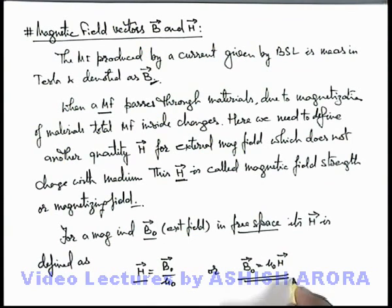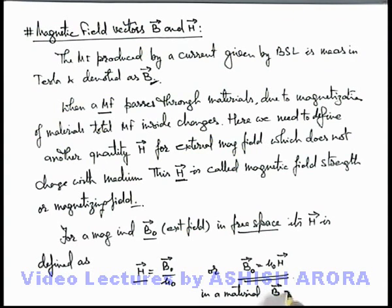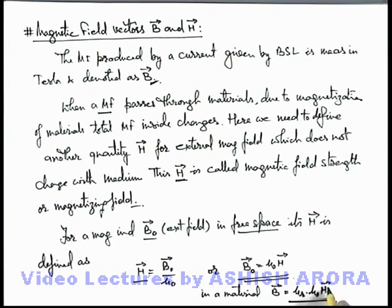And when we talk about a medium, we directly multiply by the permeability of the medium, which gives us the value of magnetic field inside the material. In a material, B vector can be directly written as μᵣ multiplied by μ₀H vector. In coming sections we'll get more relations between B vector, H vector, and I vector, which is the intensity of magnetization, in different materials.